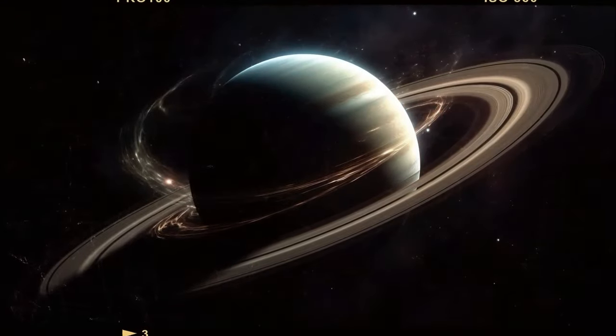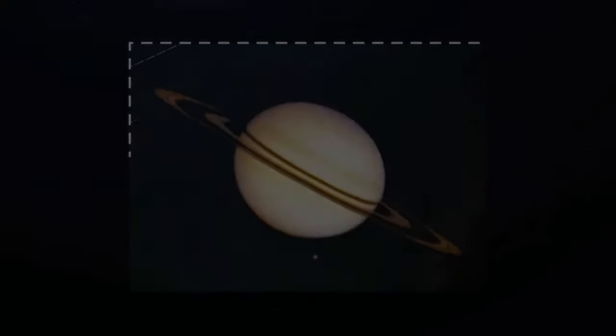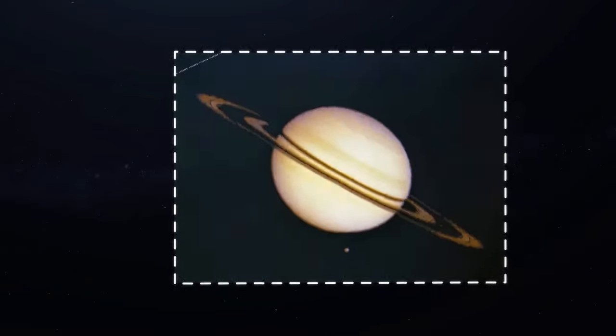Unlike most other planets that appear nearly spherical, Saturn is exceptionally flattened due to its rapid rotation, making it bulge at its equator and flatten at its poles. It measures roughly 75,000 miles in diameter at its equator and spans around 68,000 miles from pole to pole.